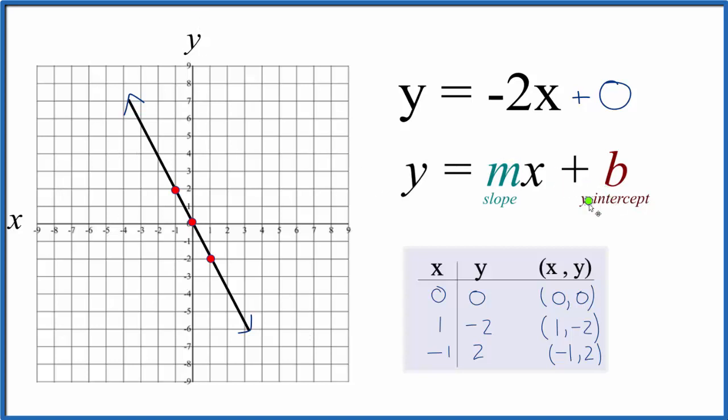So we have the y-intercept is 0. Come down here to 0 and that's our first point. For m the slope here we have negative 2 but it's helpful to think about this as negative 2 over 1 because then we have rise over run.